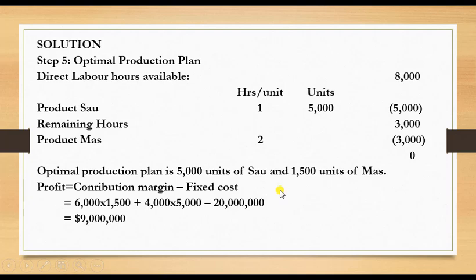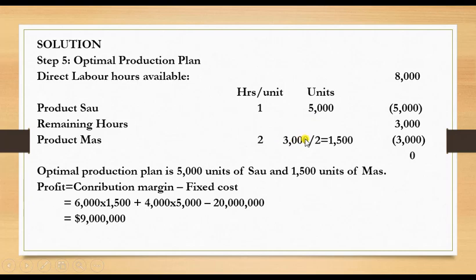Although profit wasn't asked, profit equals contribution margin minus fixed cost. Contribution for Mass: $6,000 per unit × 1,500 units = $9,000,000. Contribution for Sal: $4,000 per unit × 5,000 units = $20,000,000. Total contribution = $29,000,000, minus fixed costs of $20,000,000, leaving a profit of $9,000,000.